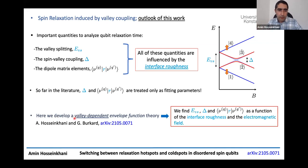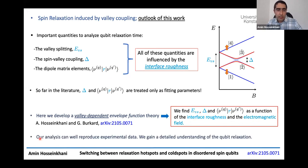So in this work, I develop a valley-dependent envelope function theory, which enables us to accurately analyze all of these important quantities in detail as a function of interface roughness and electromagnetic field. As a result, our analysis can well reproduce experimental data for the spin relaxation time and we can also anticipate some very interesting features.